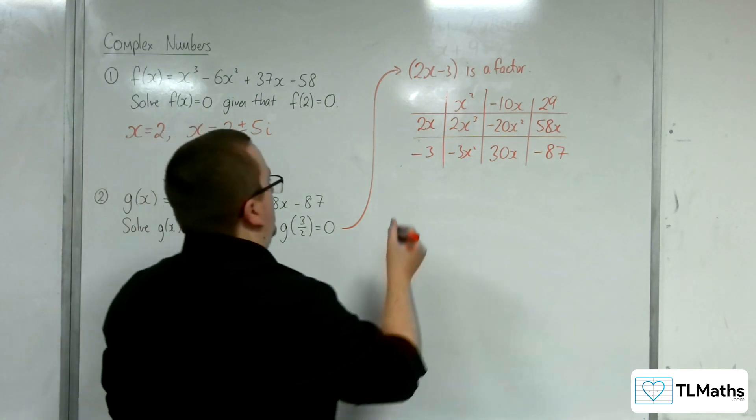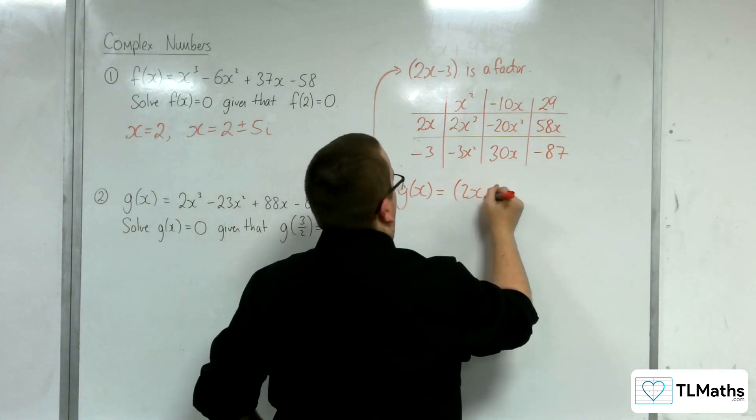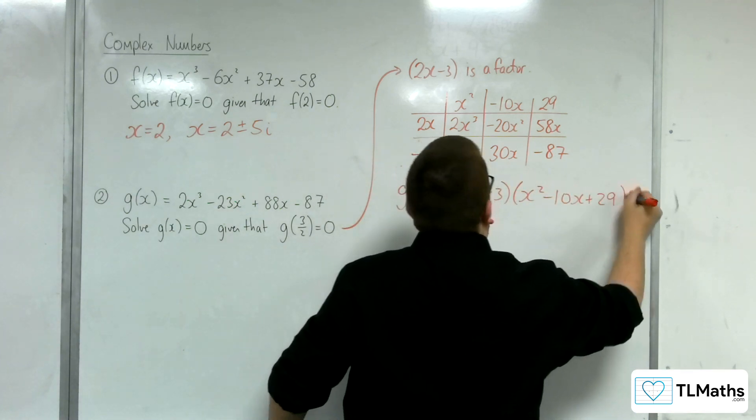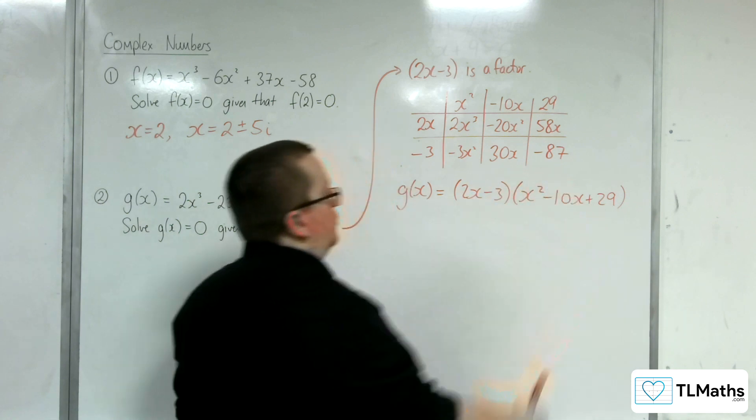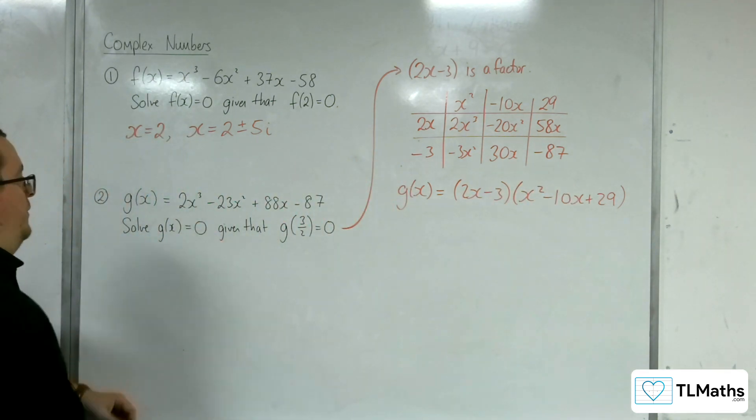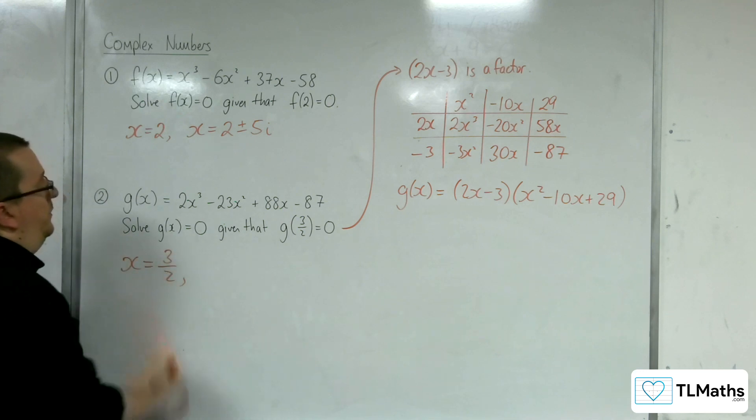So, we can write g(x) as (2x - 3) times (x² - 10x + 29), a product of a linear factor and a quadratic factor. So, we know one of the solutions already. x = 3/2.